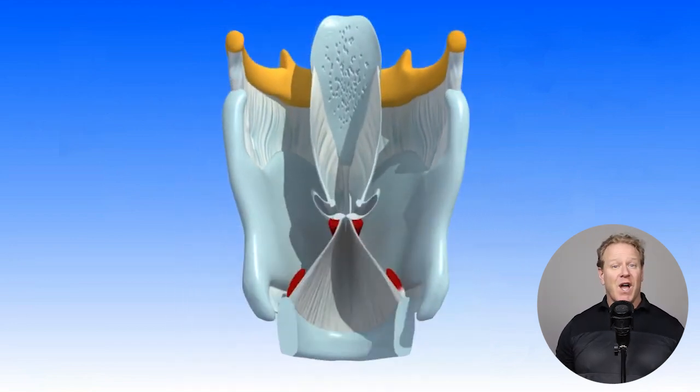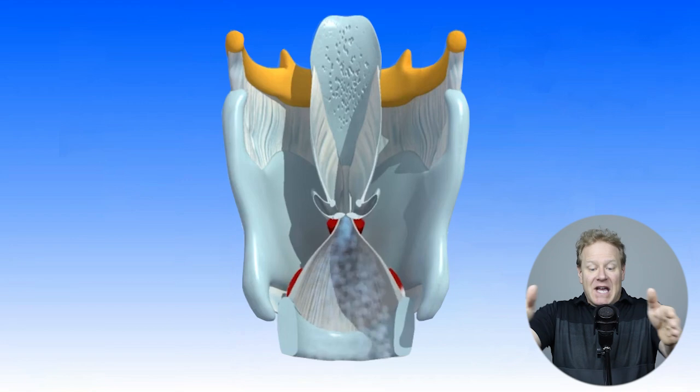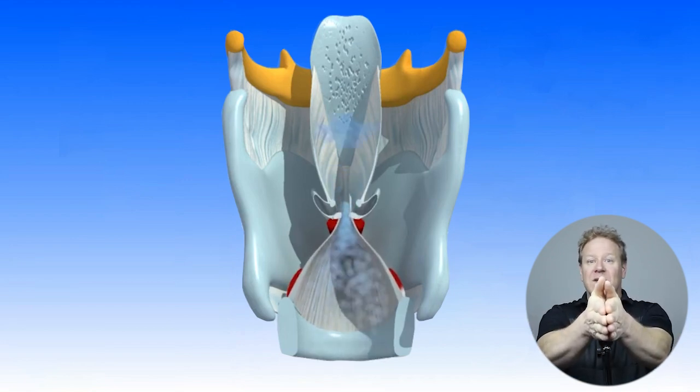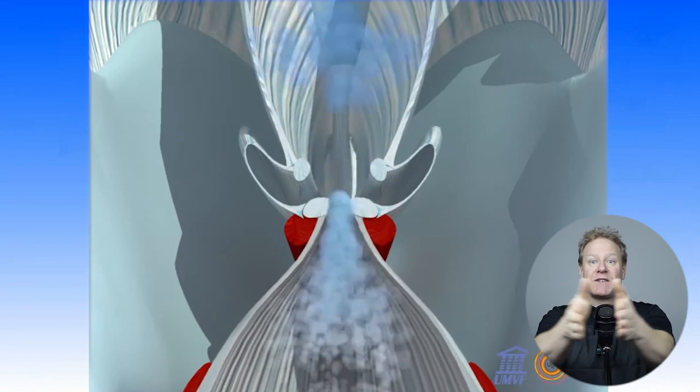The Bernoulli effect occurs when air passes through two objects, creating a vacuum and sucking those two objects together. The air passing between the two pieces of paper created a vacuum, sucking the two pieces of paper together. Back pressure was generated, causing the air to push the papers apart. This process was repeated over and over again, resulting in a fluttering effect. This same process occurs with the vocal cords. When air passes through the aperture of the vocal cords, it creates a vacuum and draws the vocal cords together. Once they are in contact, back pressure is generated, causing the vocal cords to separate. This cycle repeats hundreds of times per second.